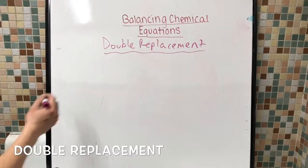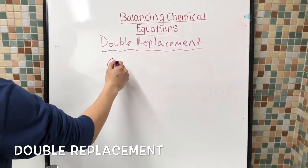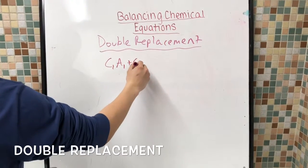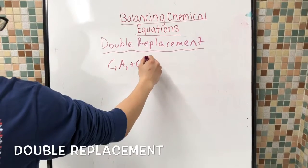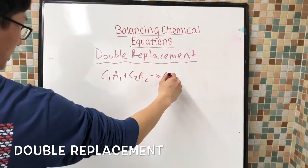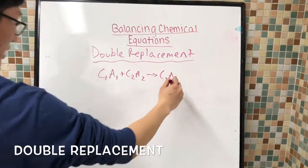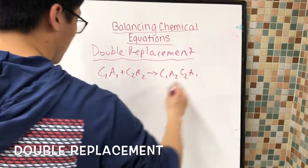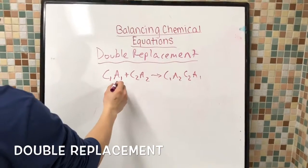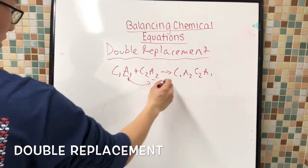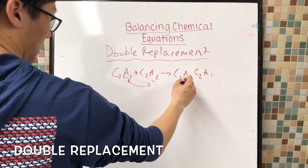And this can be shown with the equation cation 1, anion 1 plus cation 2, anion 2 makes cation 1, anion 2, and cation 2, anion 1. So here you can see that these anions are switched in the product. So it's here and here.